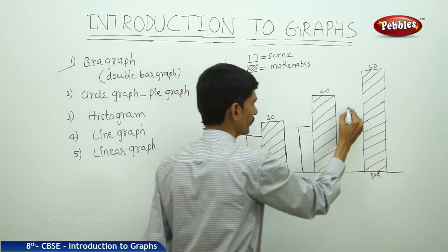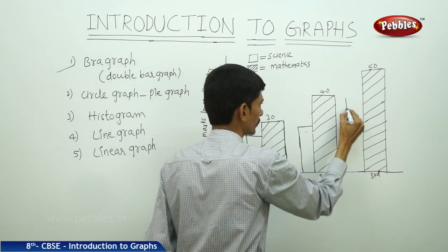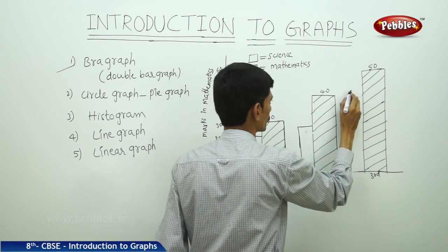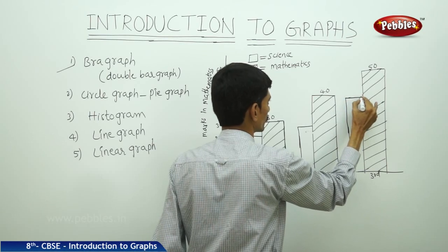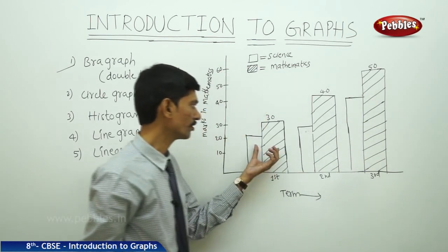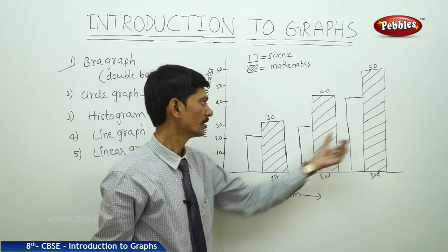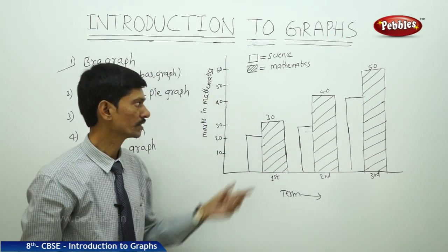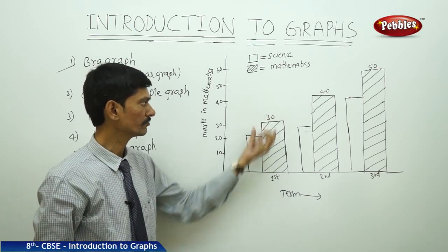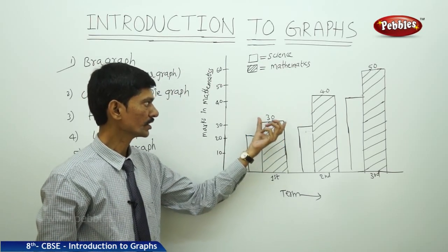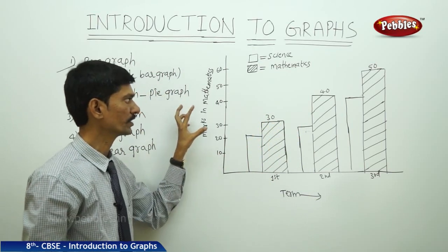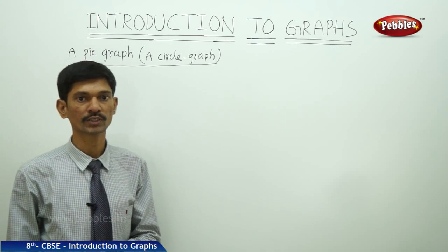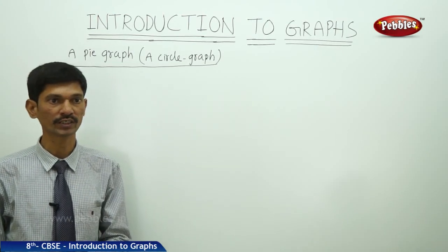Here we can compare the two subjects' marks across the three term examinations. The width of each bar is the same and the gap between each two consecutive bars is also the same. The length or height of each bar depends on the particular marks in the different subjects. So the bar graph is used to show the comparison among quantities.